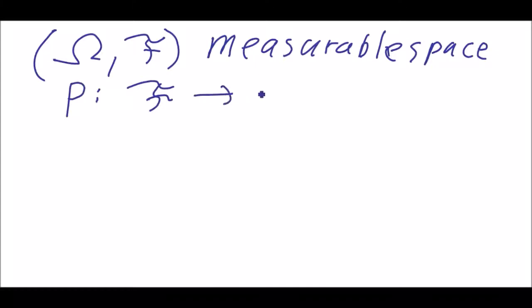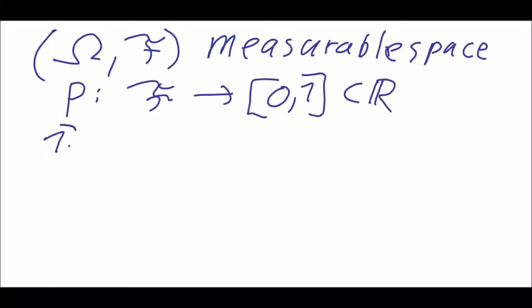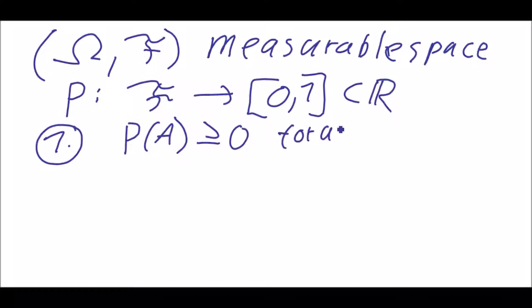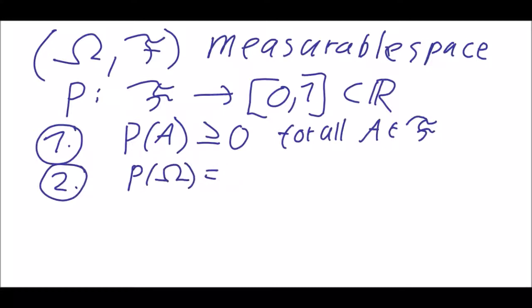The probability function P maps from F to the interval from 0 to 1 in the real numbers. Three things must be fulfilled: first, P of A must be at least 0 for all A in F; second, P of Omega must equal 1, because Omega contains all possible outcomes and together they give a probability of 1, meaning 100%.